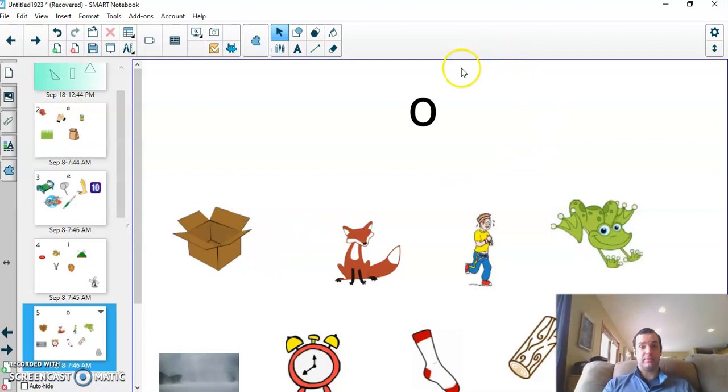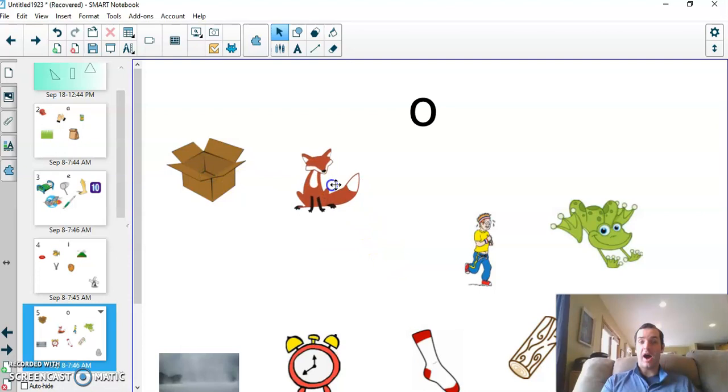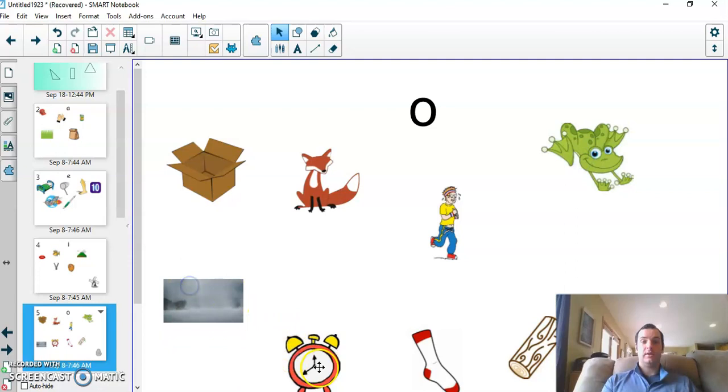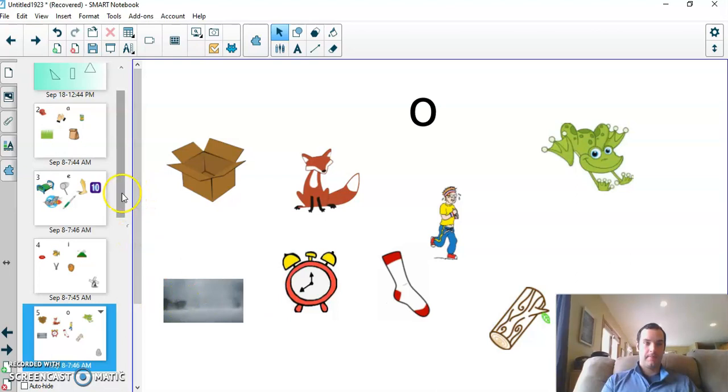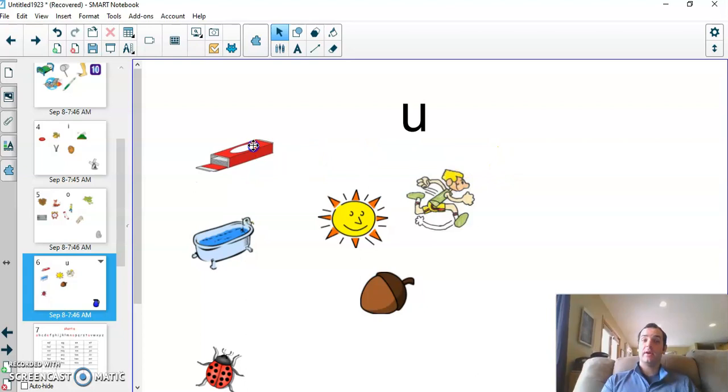The short o sound—this is more practice. This is the ah sound, so box, jog, frog, fog, clock, sock, lock. All have the short o sound.